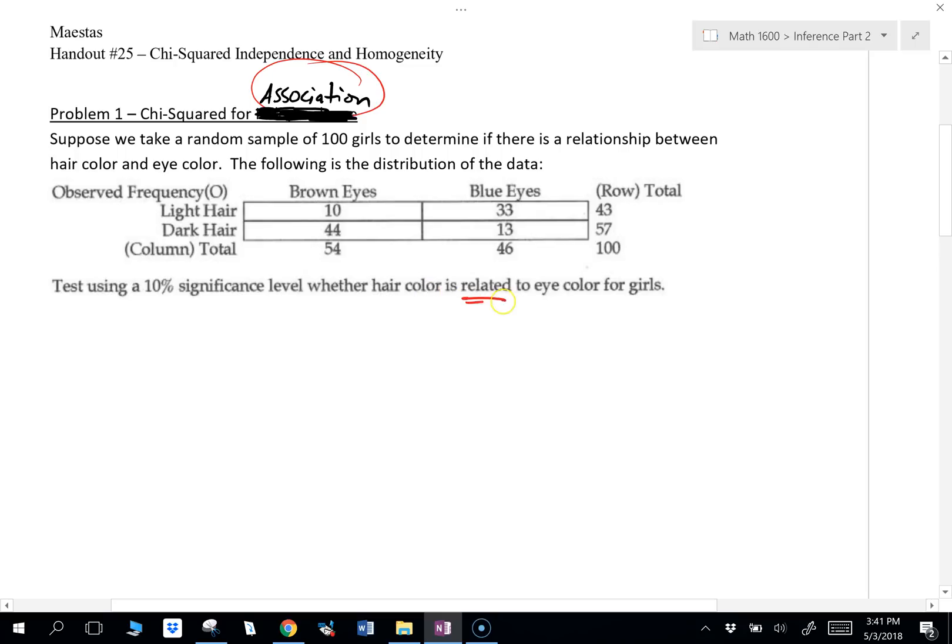So related is the key word. So we see the words like association, related, relationship. Those are key words telling us we're going to use a chi-square test for association.